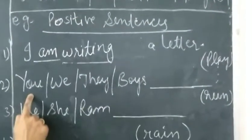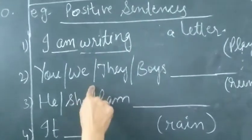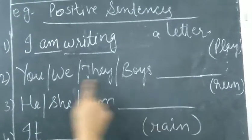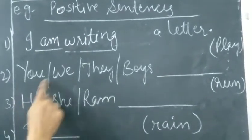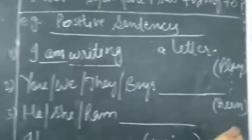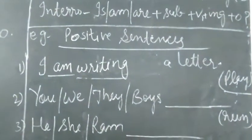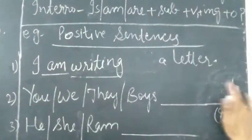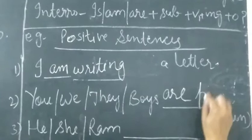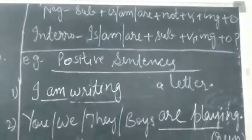Now, in second case here, you, we, they, boys. I have taken all the subjects all together just to give you example here. You, we, they, boys. All these are plurals. This is second person. This is plural of first person. They, plural of third person. Boys, plural. Here we have to use the form for play a verb. So, what will come here? Are. Because these all are plurals, play will change into playing. And then full stop.